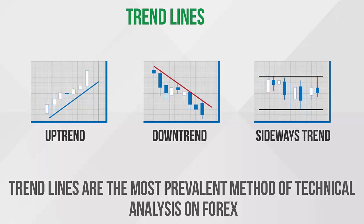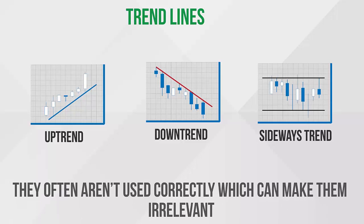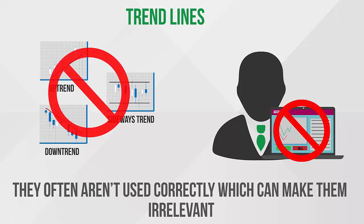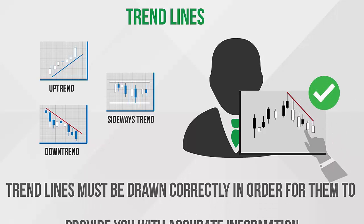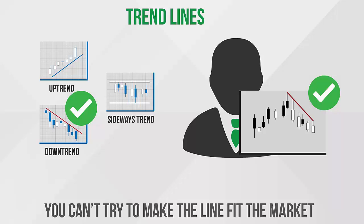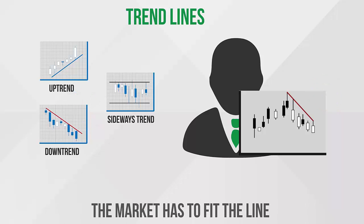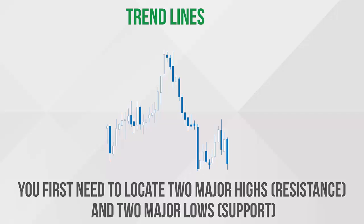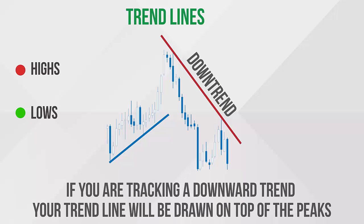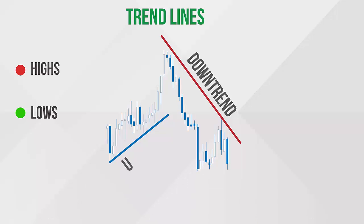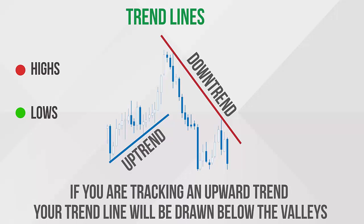Trend lines are the most prevalent method of technical analysis on Forex. However, they often aren't used correctly, which can make them irrelevant. Trend lines must be drawn correctly in order to provide accurate information — you can't try to make the line fit the market; the market has to fit the line. To draw a trend line accurately, you first need to locate two major highs (resistance) and two major lows (support), then draw a line between the two points. If you are tracking a downward trend, your trend line will be drawn on top of the peaks. If you are tracking an upward trend, your trend line will be drawn below the valleys.